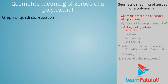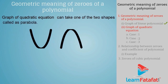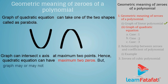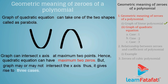The graph of a quadratic equation can take one of two shapes called a parabola. In either case, the graph can intersect the x-axis at maximum 2 points. This signifies that a quadratic equation can have maximum two zeros, but the graph may or may not intersect the x-axis. Thus, it gives rise to three cases.